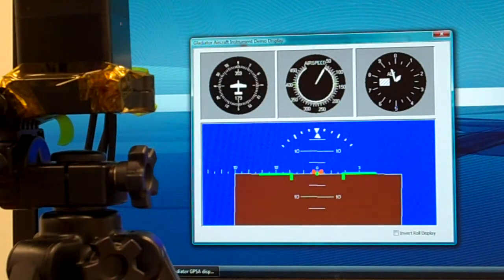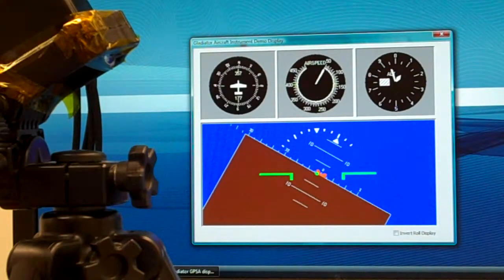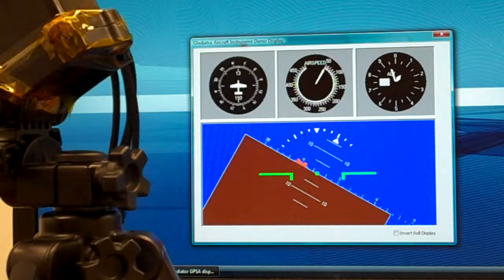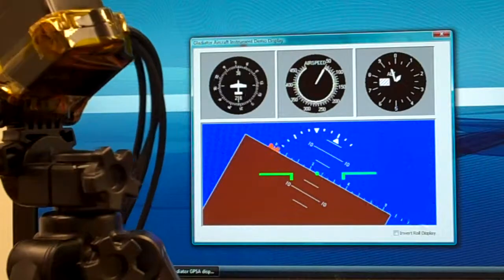Now for roll, I will move the unit at an angle. And now I will move it positive 45 degrees. And back to zero, and negative 45 degrees.